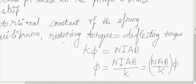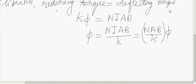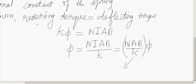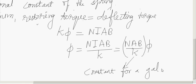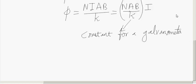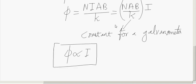The quantity inside the bracket, NAB/k, is a constant for a given galvanometer — we can call it the galvanometer constant — because N, the number of turns, is fixed; area A is fixed; B is fixed; and k is also fixed. So for a given galvanometer this quantity is constant, and therefore phi is proportional to I — the deflection depends on the current flowing through the galvanometer.